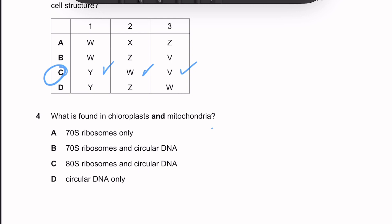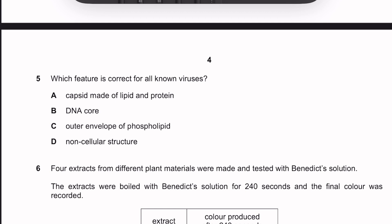Question four: what is found in both chloroplasts and mitochondria? Both have 70S ribosomes and circular DNA. Neither has 80S ribosomes — those are found in the cytoplasm of eukaryotic cells. Both organelles have circular DNA, consistent with the endosymbiotic theory.